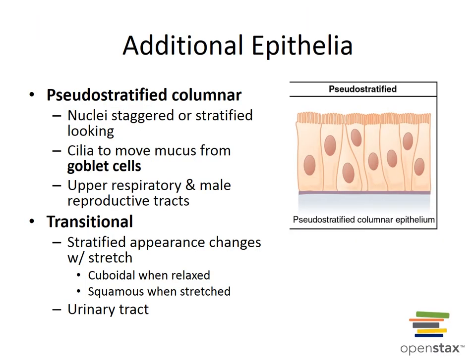Pseudostratified ciliated columnar epithelium is a single layer of cells with differing heights, with some not stretching to the free surface. The nuclei are seen at different levels, and it may contain mucus-secreting goblet cells. It functions in secretion of mucus and propulsion of mucus via ciliary action. The non-ciliated type is found in male sperm-carrying ducts and ducts of large glands; the ciliated type is found in the trachea and most of the upper respiratory tract.